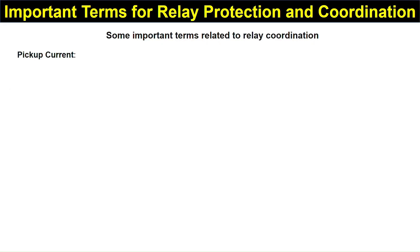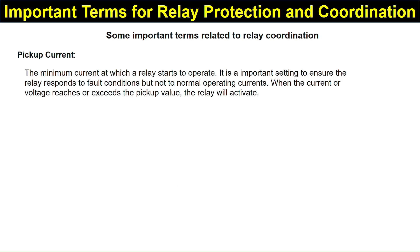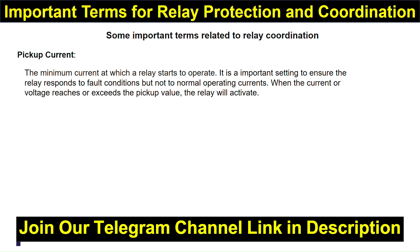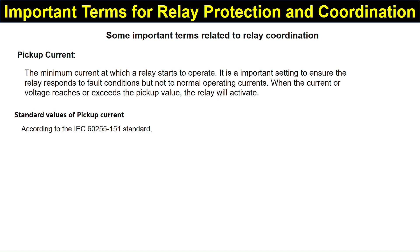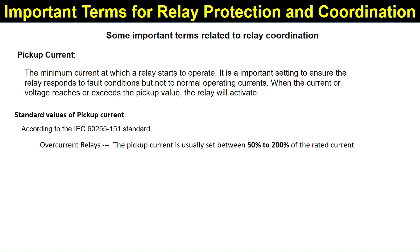The first term is pickup current. This is the minimum current at which a relay starts to operate. It is an important setting to ensure that a relay responds to fault conditions but not to normal operating currents. When the current or voltage reaches or exceeds the pickup value, the relay will activate.